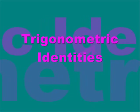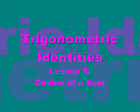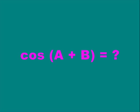Welcome to lesson 5 on trig identities. This time we will derive the identity for cosine of a plus b. Last time we derived it for sine of a plus b. Because this is a continuation of that lesson, please review that before continuing.